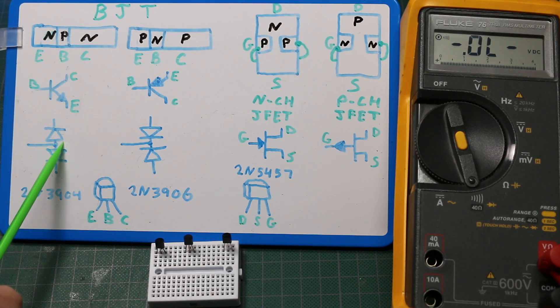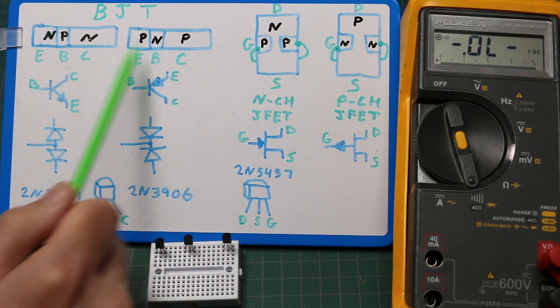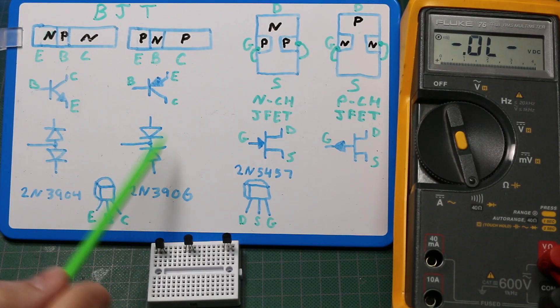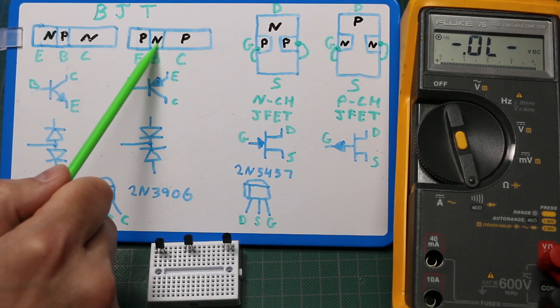So for NPN, the P side, the anode of the diode, would be connected to the base and then each cathode would be the N-type material for the emitter and collector. The opposite for PNP - the diodes face the other way with the cathode in common for the N-type.